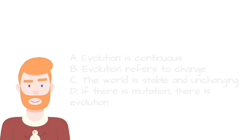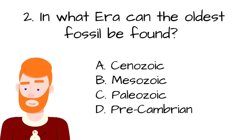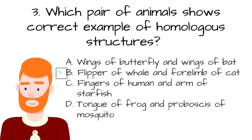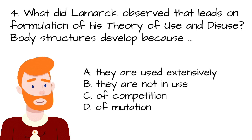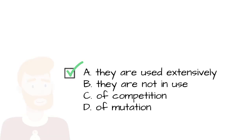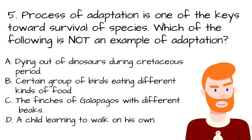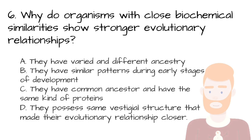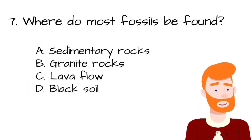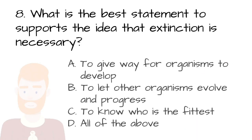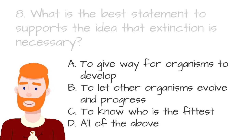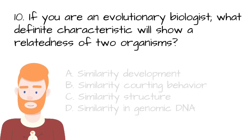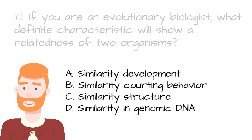Let's try to answer these review questions. All of the following statements describe evolution except — which one? In what era can the oldest fossil be found? Which pair of animals shows correct examples of homologous structures? What did Lamarck observe that led to the formulation of his theory of use and disuse? Which of the following is not an example of adaptation? The organisms with close biochemical similarities show stronger evolutionary relationships. Where do most fossils be found? What is the best statement that supports the idea that extinction is necessary? Which of the following statements best explains the theory of natural selection? If you are an evolutionary biologist, what definite characteristics will show a relatedness of two organisms?